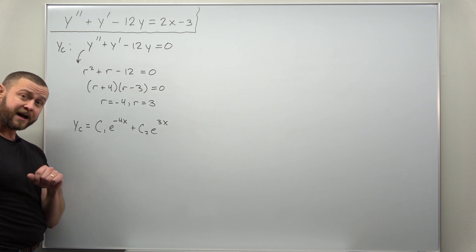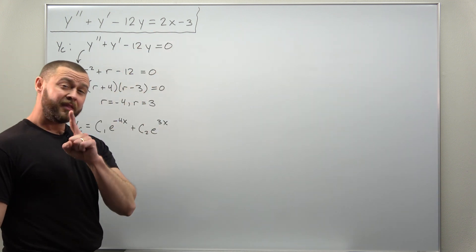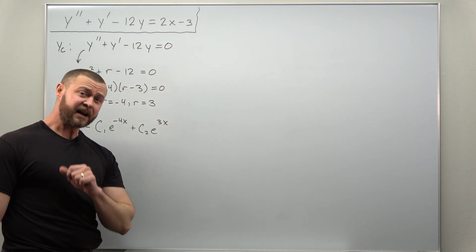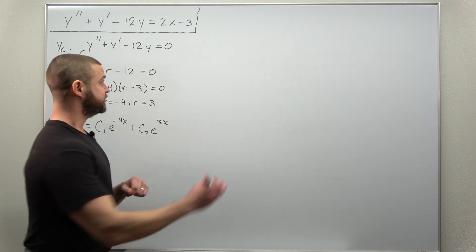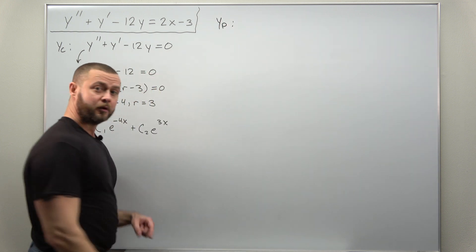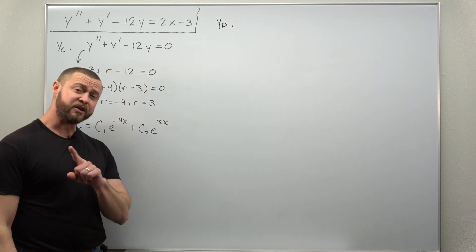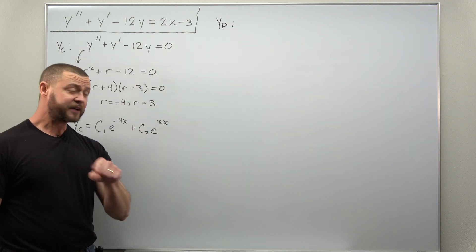Now to find the particular solution, we start by looking at the right hand side g of x and using that to determine a form for the particular solution. So I always like to write down what g of x is. The right hand side is 2x minus 3.